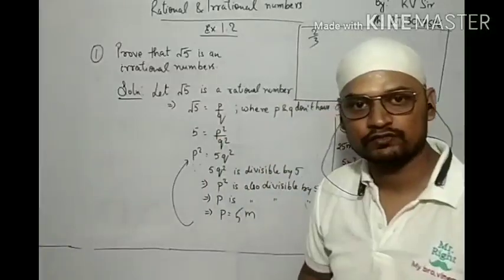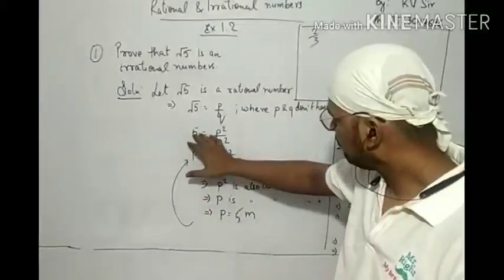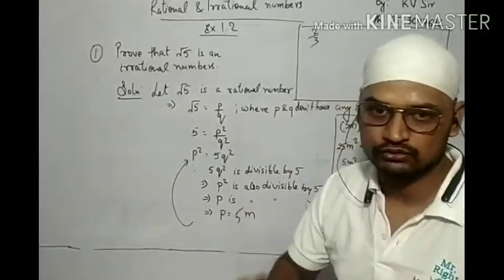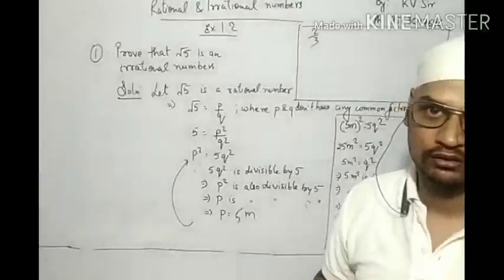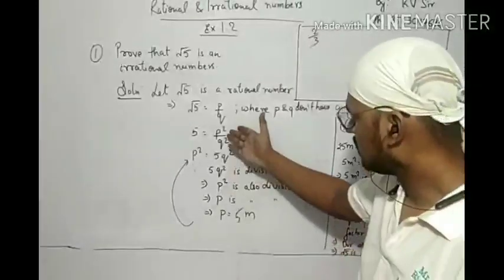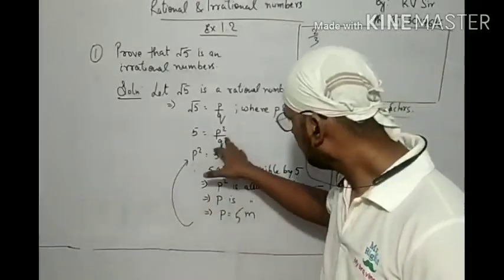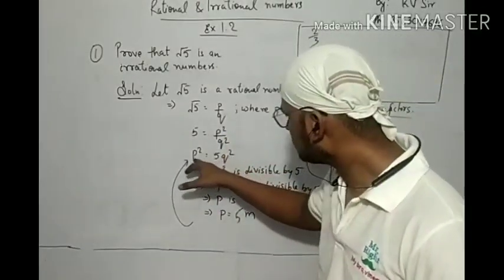Squaring both sides, we get 5 is equal to p squared upon q squared. Therefore p squared equals 5q squared.